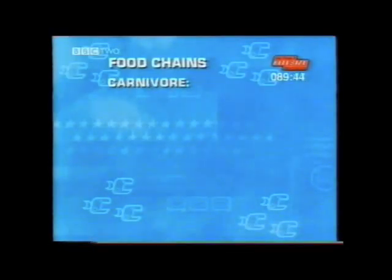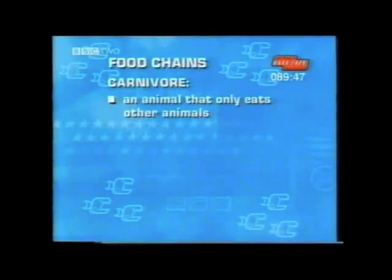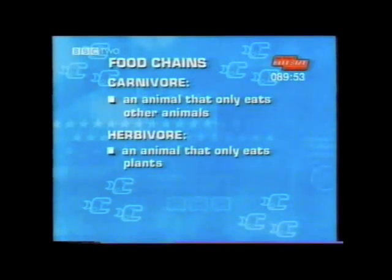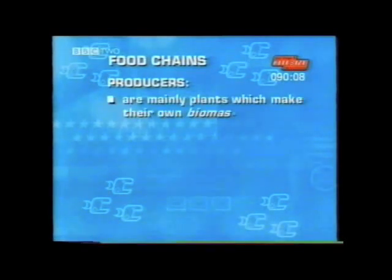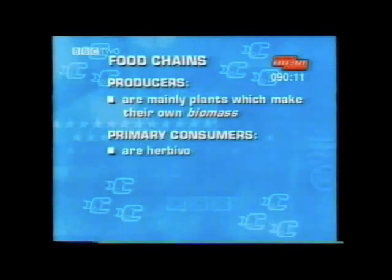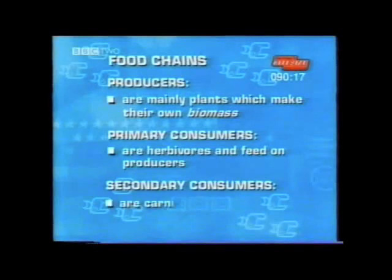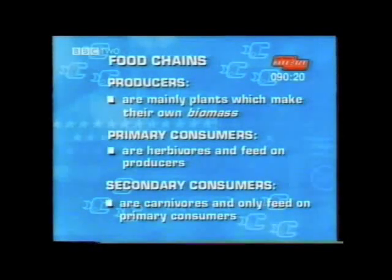Here are some more definitions of relationships in food chains. A carnivore is an animal such as a lion or a hawk that only eats other animals. A herbivore is an animal that only eats plants — rabbits, slugs and greenfly are all herbivores. Omnivores are animals that eat both plants and animals; examples are ourselves, blue tits and rats. In a food chain, producers are plants which make their own food — biomass. Primary consumers are animals that are herbivores and only feed on plants, the producers. Secondary consumers are animals that are carnivores and only feed on other animals, the primary consumers.